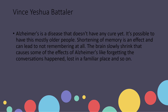Alzheimer's is a disease that doesn't have any cure yet. It is possible to have this disease, mostly in older people. Shortening of memory is an effect and can lead to not remembering at all. The brain slowly shrinks, which causes effects like forgetting conversations, getting lost in a familiar place, and so on.